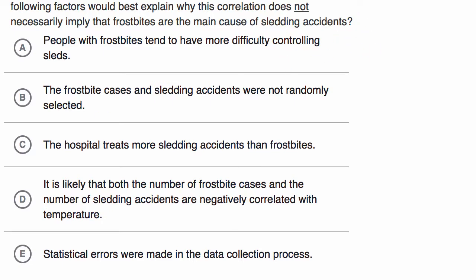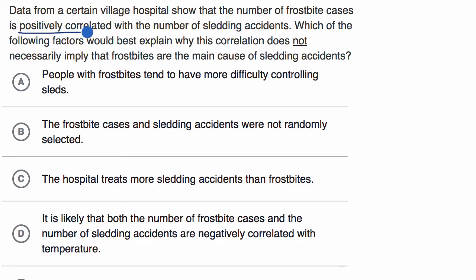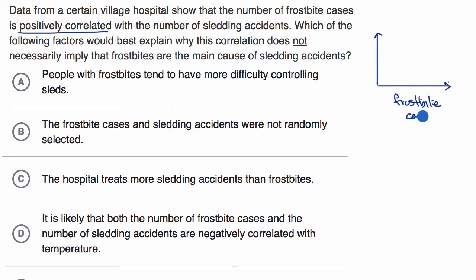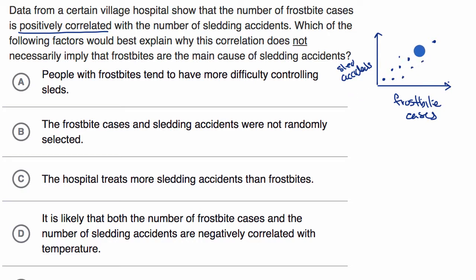Just to make sure we understand what's going on — when they say that the number of frostbite cases is positively correlated with the number of sledding accidents, one way to visualize this is with a scatterplot. The x-axis is the number of frostbite cases and the y-axis is the number of sledding accidents. Each dot could be a day. A day with a high number of frostbite cases would also have a high number of sledding accidents, and vice versa. The positive correlation means that days with more frostbite cases tend to have more sledding accidents.